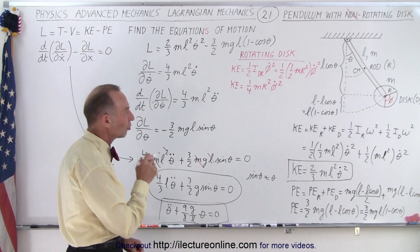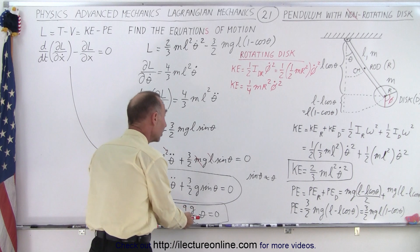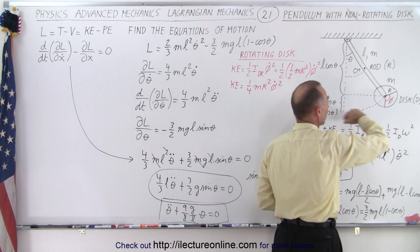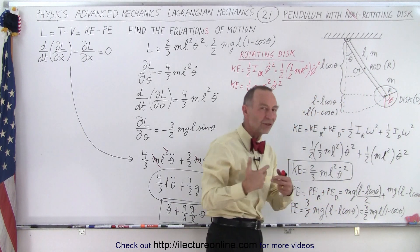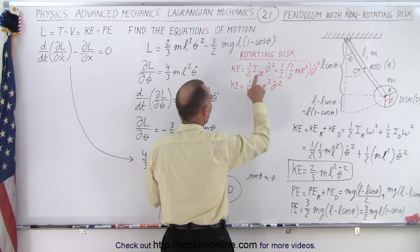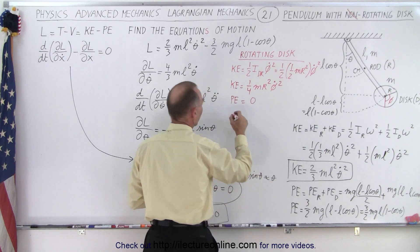What about the potential energy of the disc? Now, we already accounted for the potential energy of the lifting of the disc from its rest position here to a higher position here when it begins to oscillate. But as it rotates, there is no potential energy gained by its rotation. So therefore, for the rotating disc, the potential energy would be equal to zero.